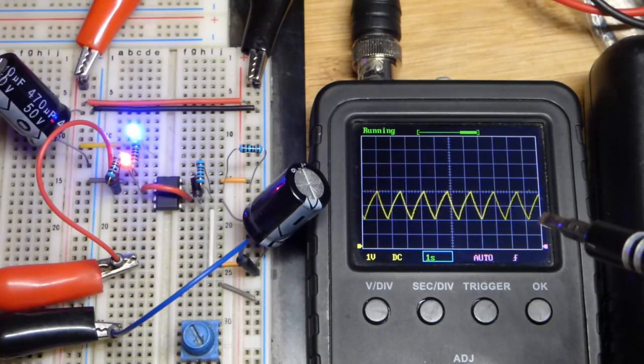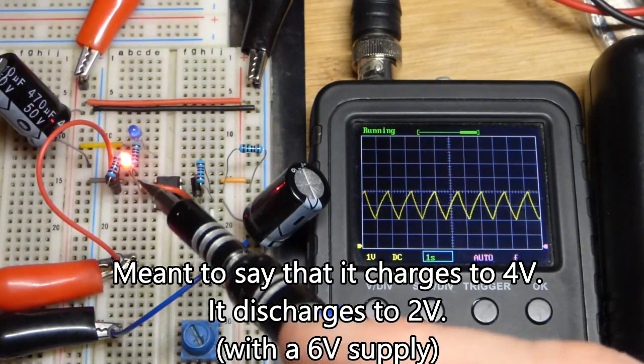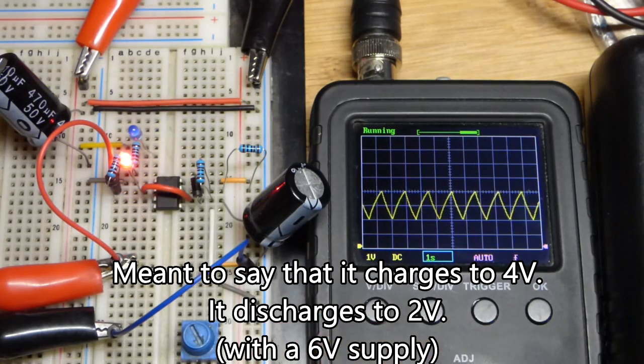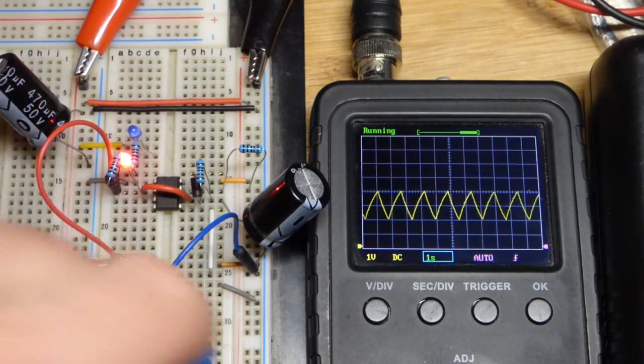While it is charging, it charges up to two volts. And while it is charging, the red LED is lit up. Hopefully that makes sense. So we're bouncing between two-thirds and one-third.